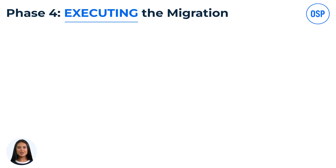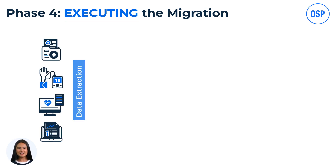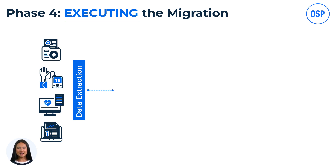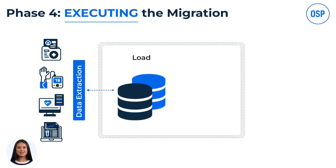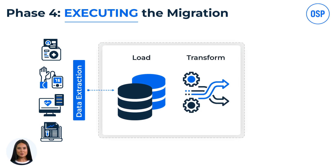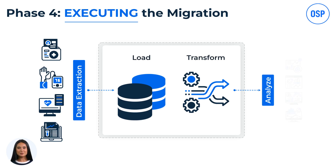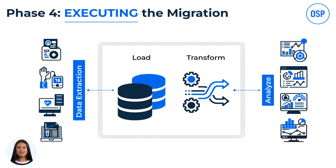Phase 4 is Executing the Migration. The first step is data extraction — carefully extract data from your legacy system, ensuring all necessary data is included and that no data is lost or corrupted. Next, transform and clean the extracted data by converting it into a format compatible with Epic EHR and removing redundant or outdated information. Validate the data to ensure accuracy and consistency. Finally, load the cleaned data into Epic EHR and perform initial tests to confirm correct loading, addressing any errors or discrepancies immediately.